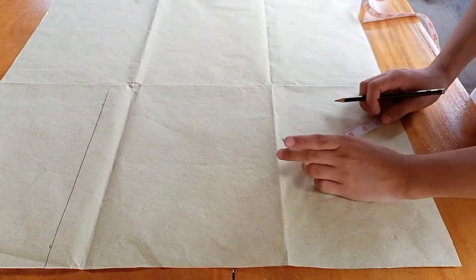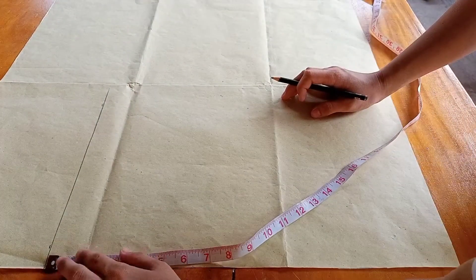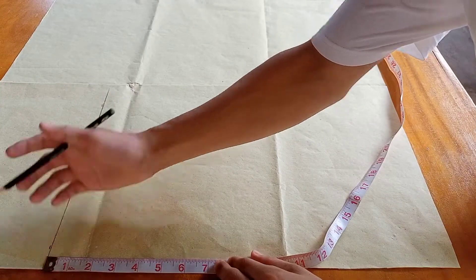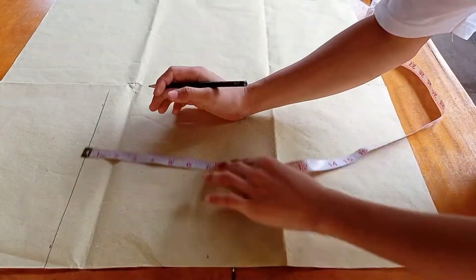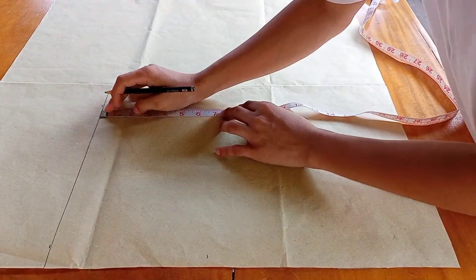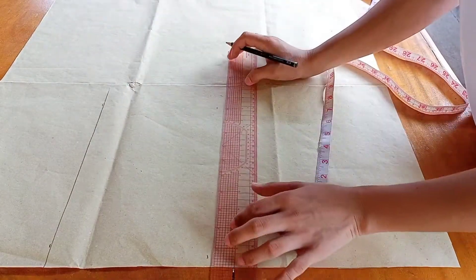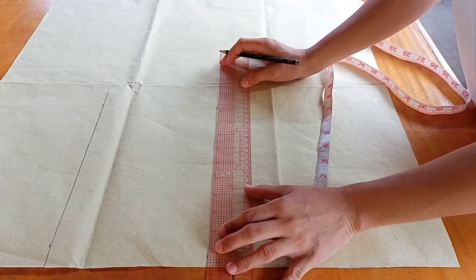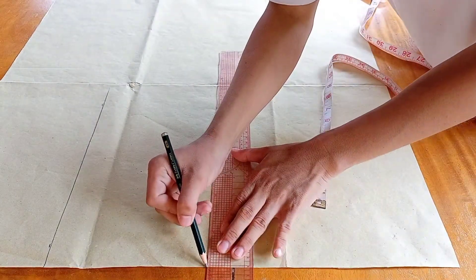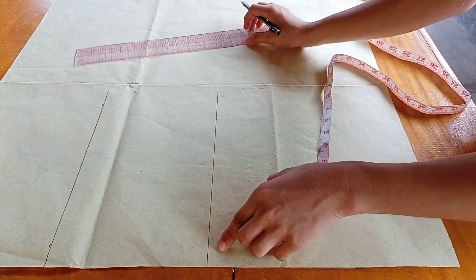Second, measure the hip depth. Seven inches downward, and square forward. This will be the hip line.